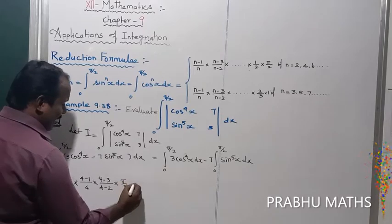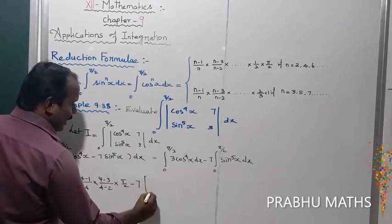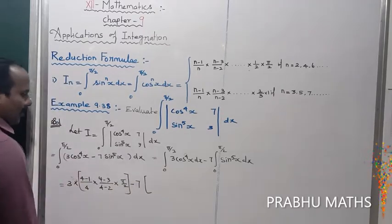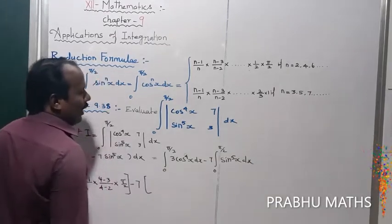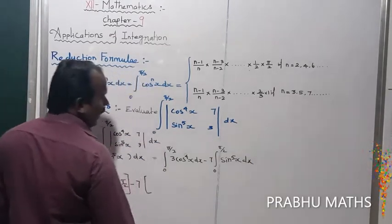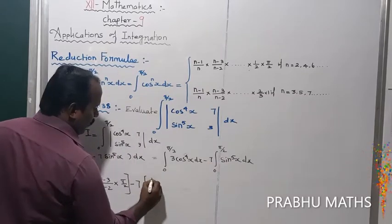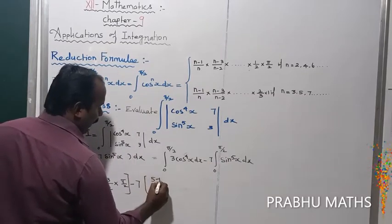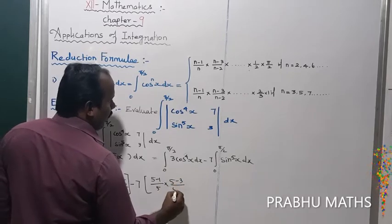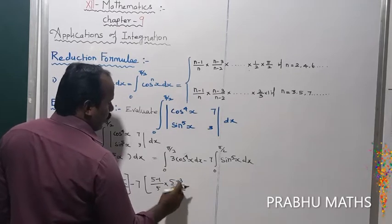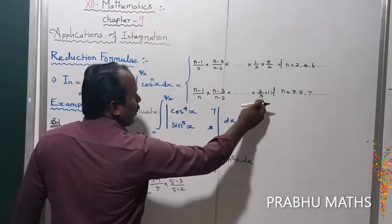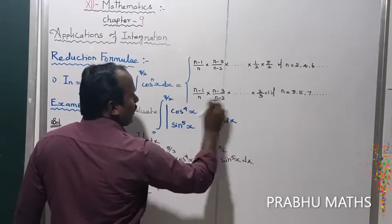The next integral uses the odd number formula since n = 5 is an odd number. The odd reduction formula gives: (5−1)/5 into (5−3)/(5−2), and we get 2/3 as the last term of this series.